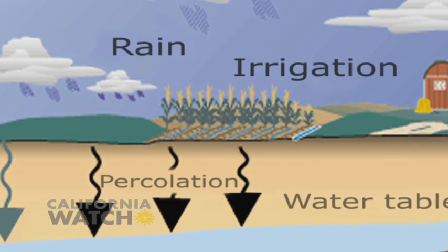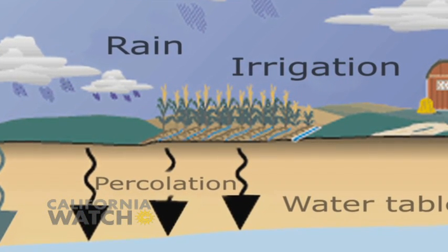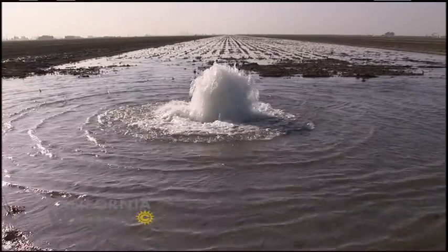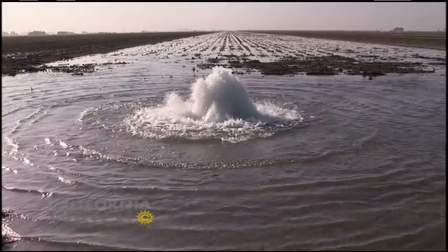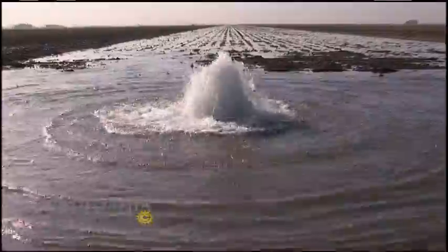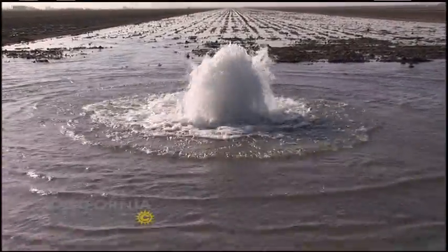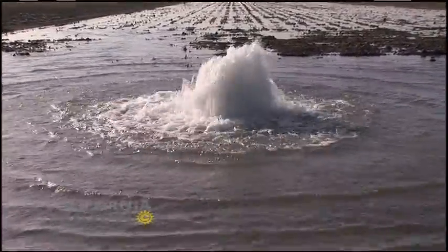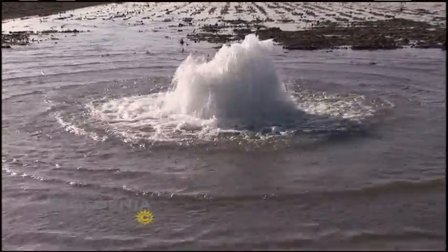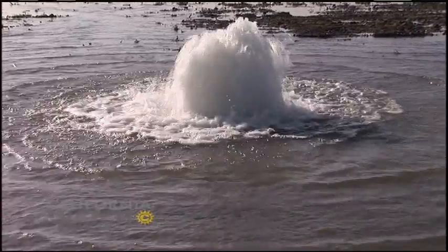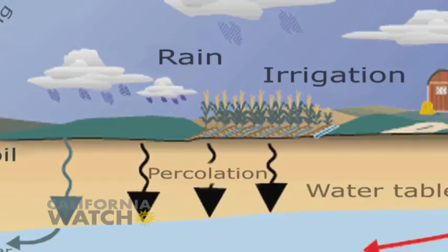Crops absorb only a portion of this nitrate, typically from 50 to 80 percent. Irrigation water and rainwater can then push the unused nitrates deeper into the ground, and eventually into underground water supplies.